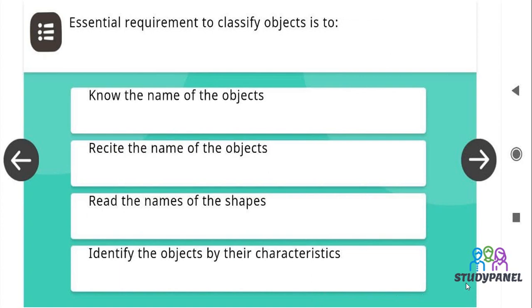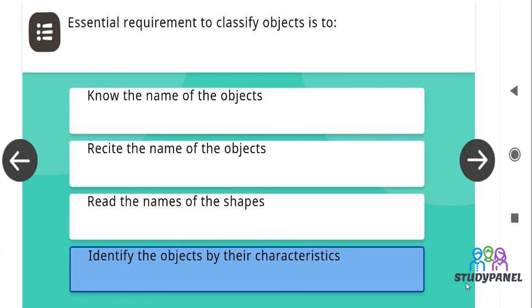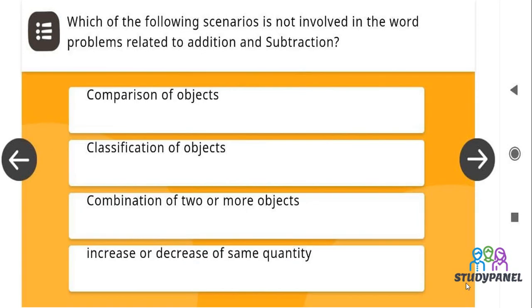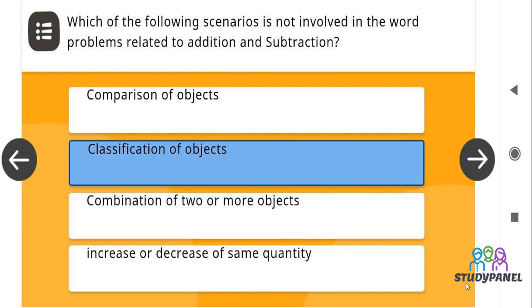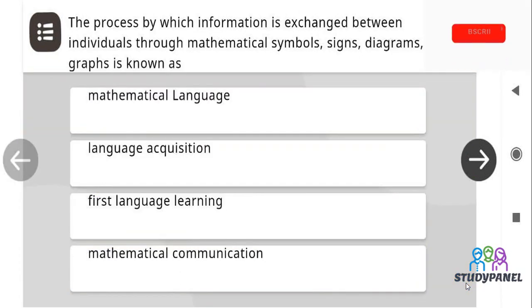Essential requirement to classify objects is to identify the objects by their characteristics. Which of the following scenarios is not involved in the word problems related to addition and subtraction? And the correct answer is classification of objects.